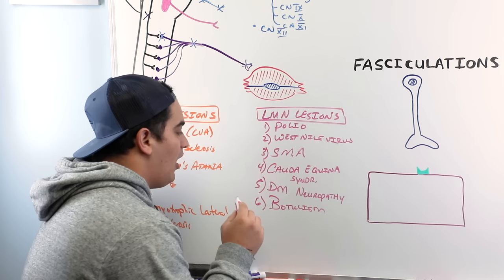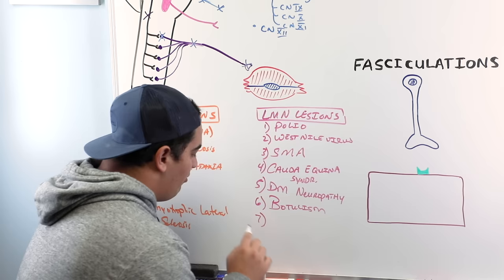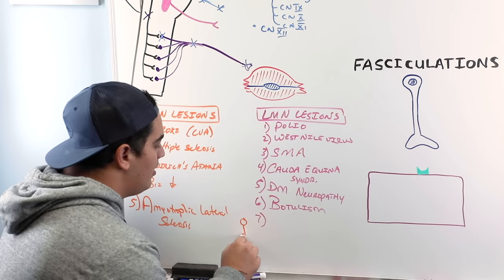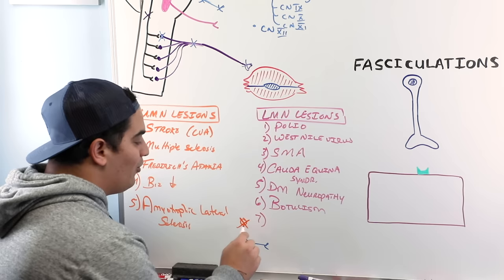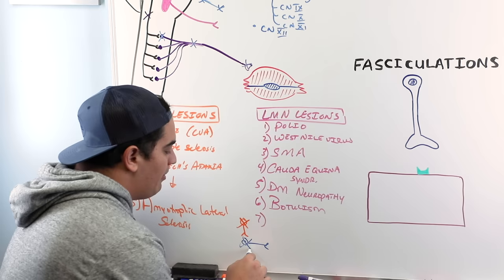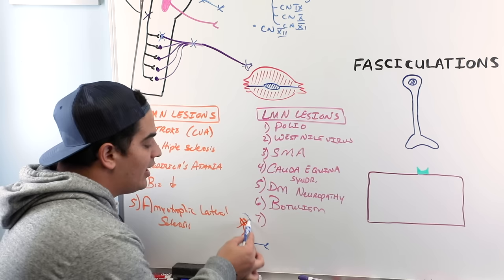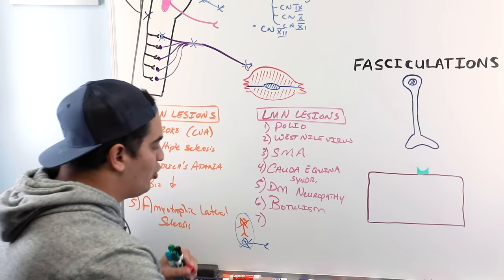Importantly, ALS is a tricky disease. While we discussed it as an upper motor neuron disease, it also has the ability to damage lower motor neurons. So in ALS you can see both upper motor neuron lesion symptoms and lower motor neuron lesion symptoms present simultaneously — amyotrophic lateral sclerosis affecting both systems.